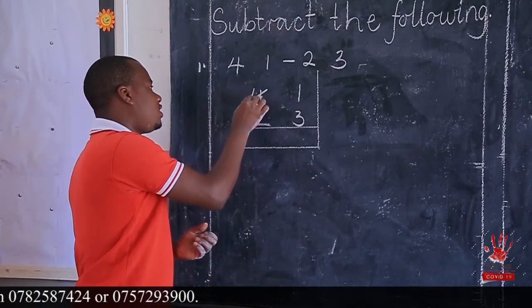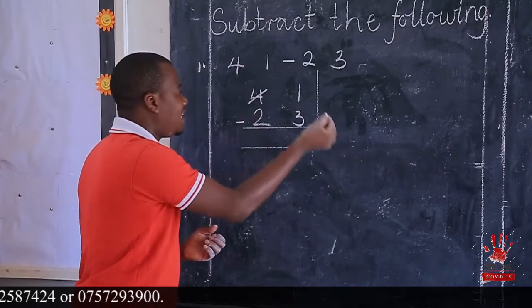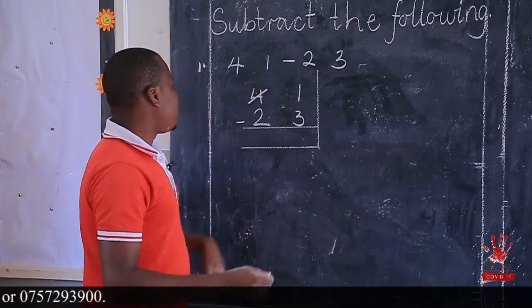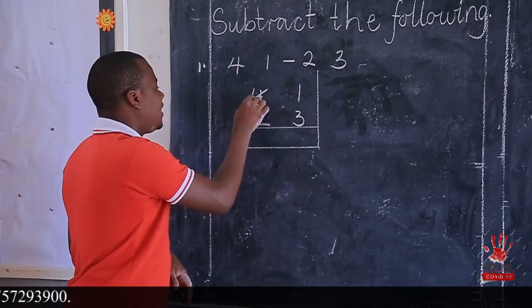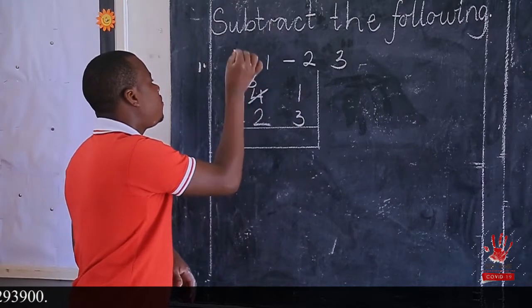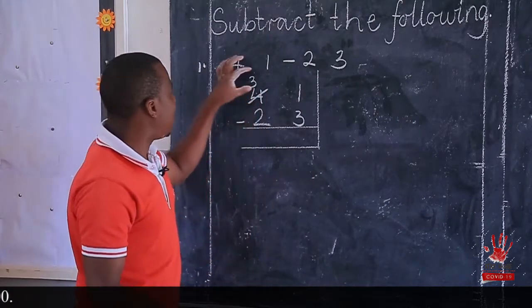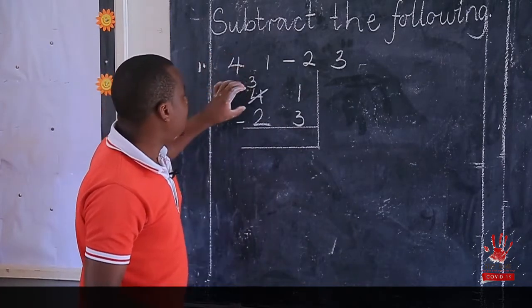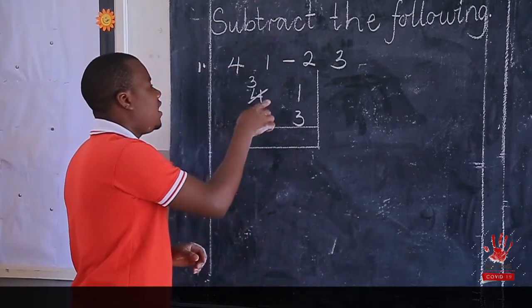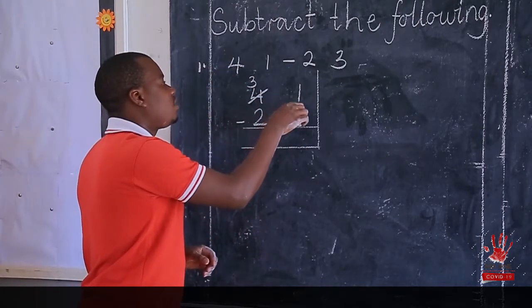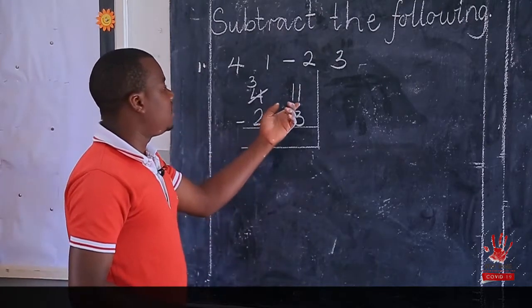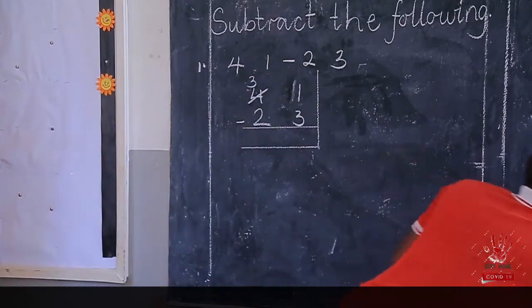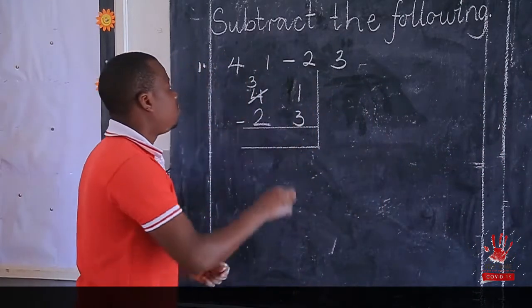So when we regroup, we cross it out. We are picking one 10. Because it is under tens, we pick one 10. Now, when we pick one 10 here, we shall remain with 3 tens. So the value of what remains will be 30, because it is under tens. We remain with 3 tens and take one 10 here. Now one 10 plus 1 gives us 11. So here we shall have 11.